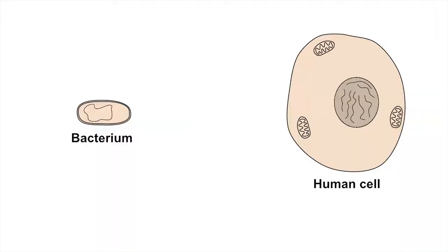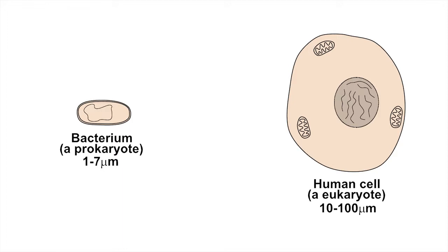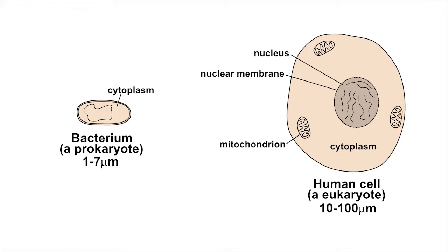The cell of a typical bacterium, called a prokaryotic cell, is different in some important respects from a cell of our own body, called a eukaryotic cell. For a start, a typical bacterial cell is much smaller than one of our body's cells, and a prokaryotic bacterial cell looks simpler inside. It doesn't have a nucleus or any other membrane-bound organelles such as mitochondria our body cells possess.